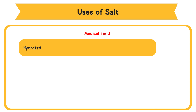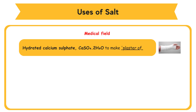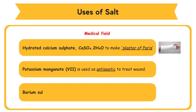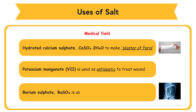Medical field: Hydrated calcium sulfate, CaSO4·2H2O, is used to make plaster of Paris. Potassium manganate(VII) is used as antiseptic to treat wounds. Barium sulfate, BaSO4, is used as barium meal for X-ray imaging.